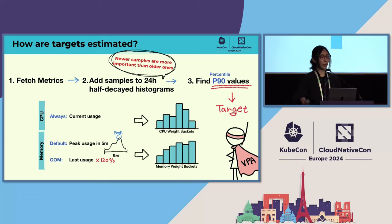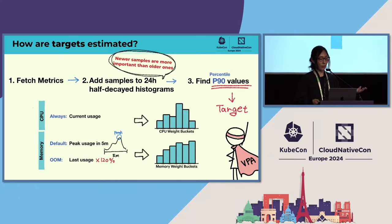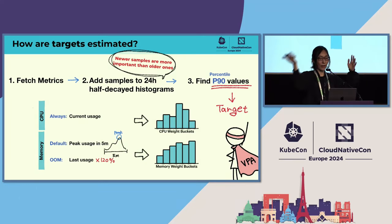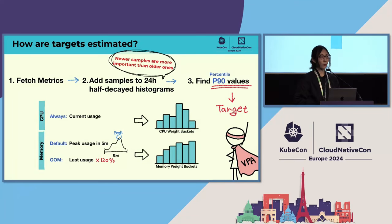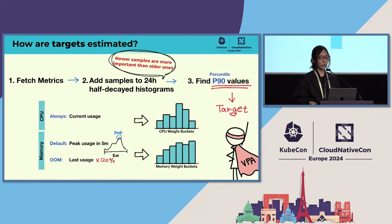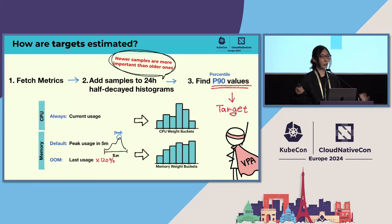For CPU, each metric sample directly gets placed into the matched bucket. For memory, VPA finds the peak usage within a five-minute window and adds only the peak value to the bucket. Additionally, VPA has special consideration for memory OOM events — when OOM happens, VPA does not just use the raw value, but multiplies the last usage by 1.2 (the default). In this way, VPA calculates recommendations considering both actual usage and OOM events.